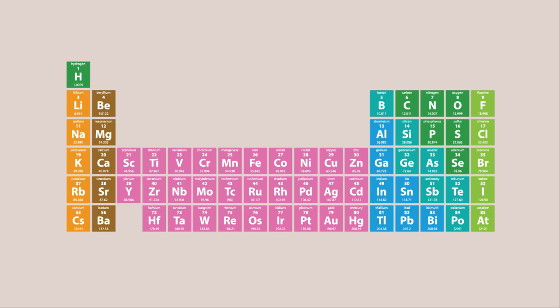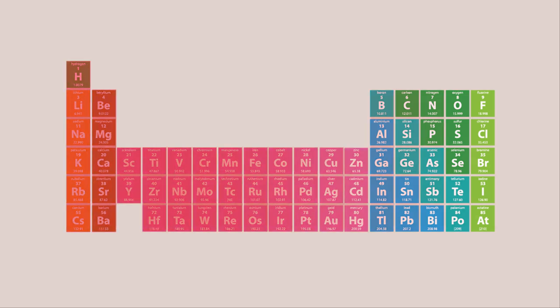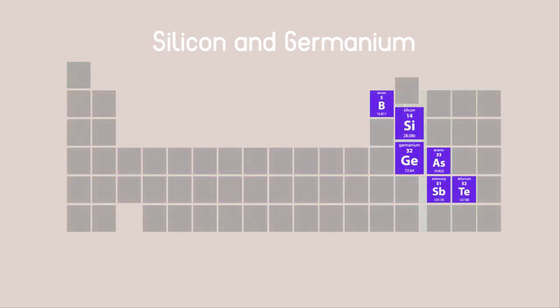In between, the elements gradually change from being metallic to non-metallic, with some like silicon and germanium neither one nor the other.